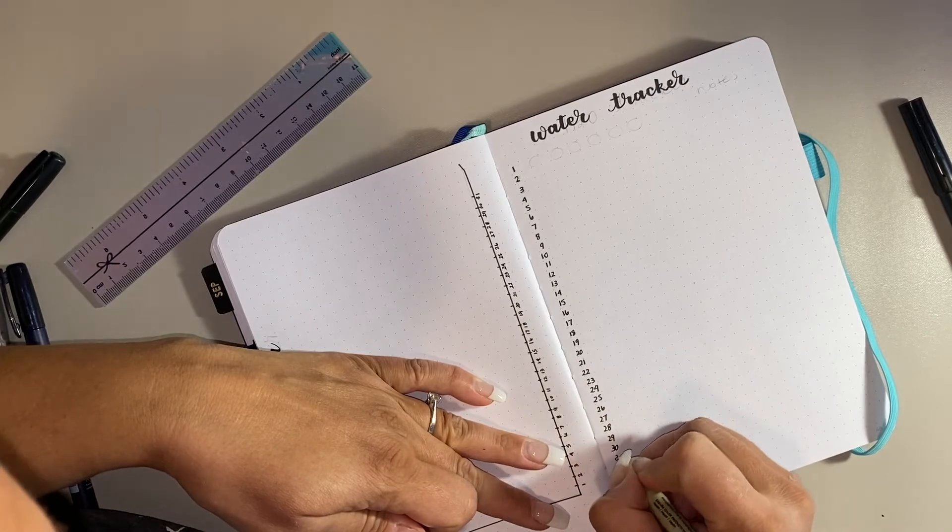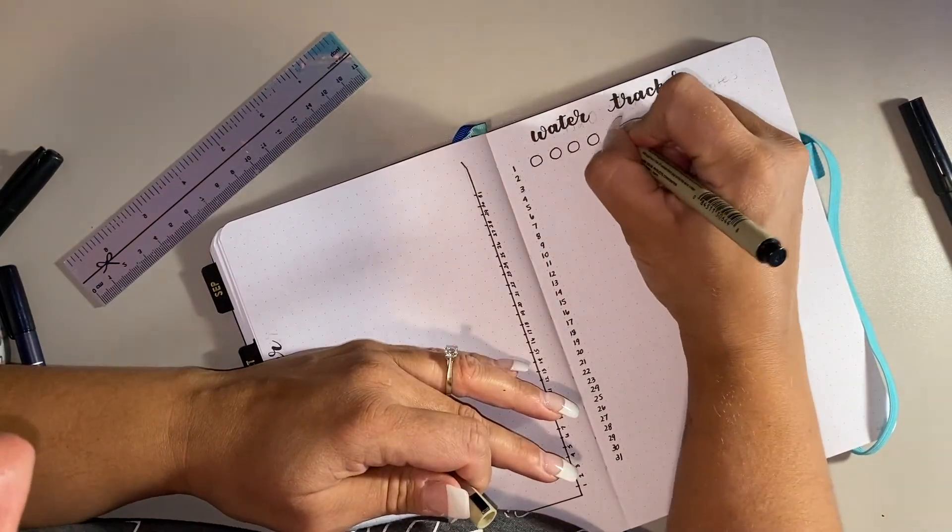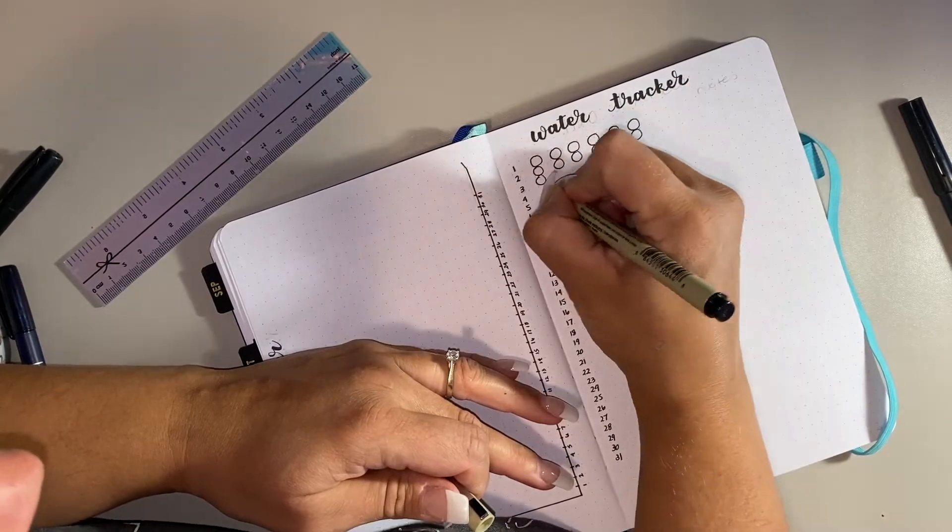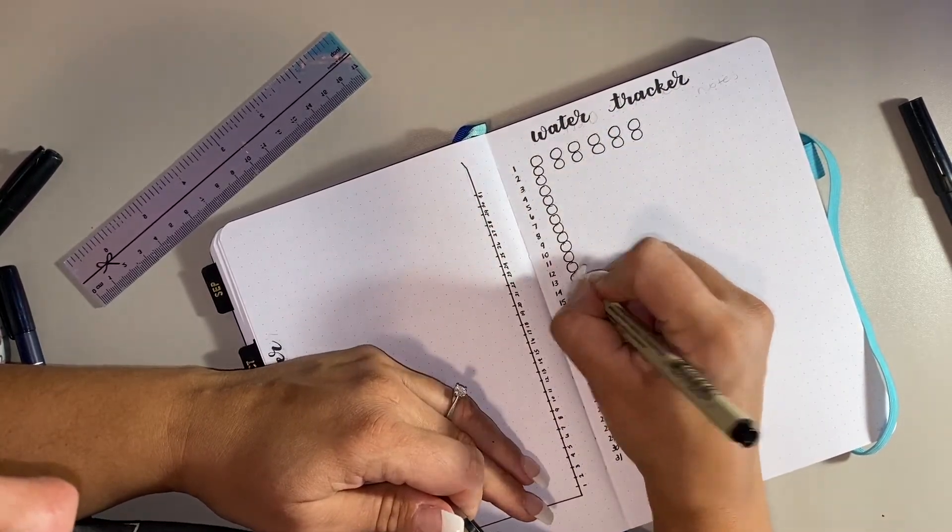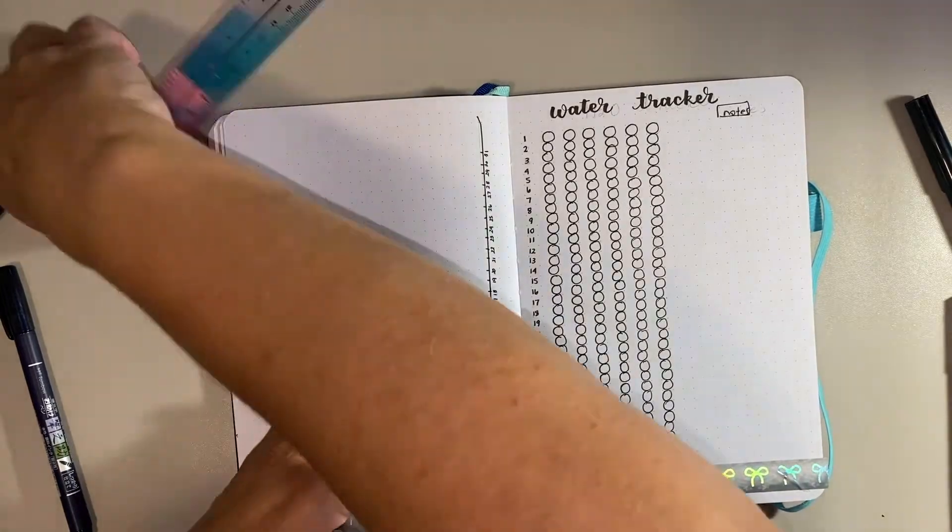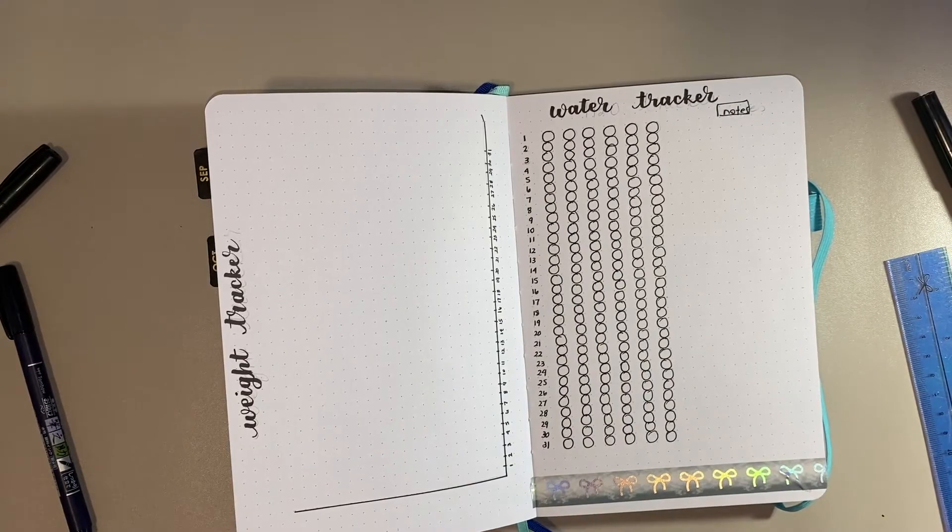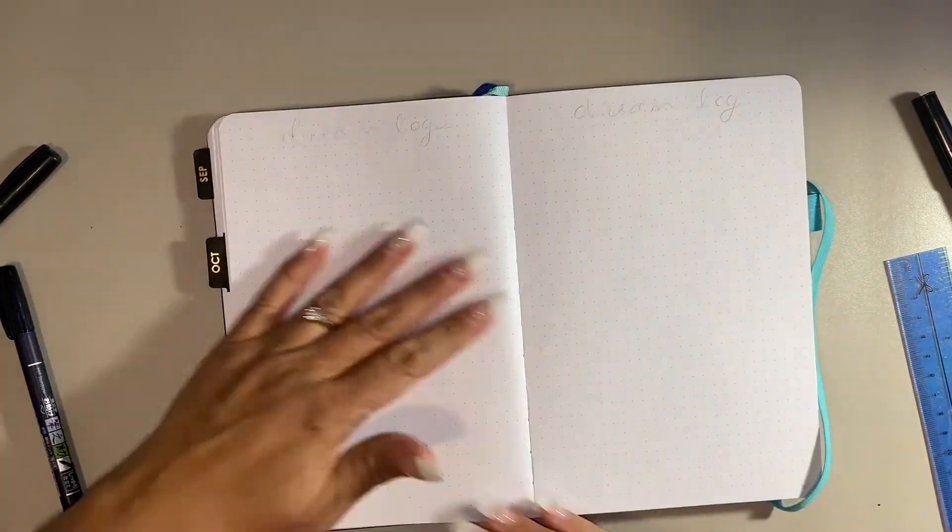This next spread is my water tracker. Again, kind of along the same lines, as I drink my water throughout the day, I just fill in each of those circles, and I can write any notes beside it, and that just helps me remember that yes, I do need to drink my bottles of water throughout the day. I'm just trimming off the washi tape here with scissors because it was too hard to tear. I left it too short to rip off of the ruler.